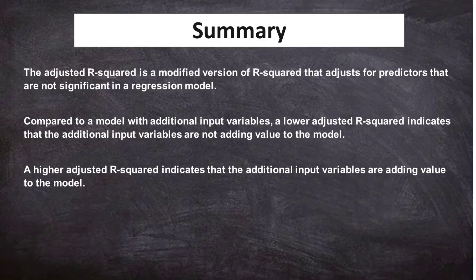The adjusted R-squared is a modified version of R-squared that adjusts for predictors that are not significant in a regression model. Compared to a model with additional input variables, a lower adjusted R-squared indicates that the additional input variables are not adding value to the model. A higher adjusted R-squared indicates that the additional input variables are adding value to the model.